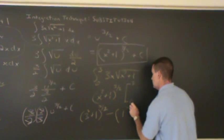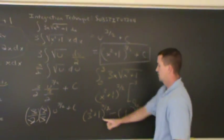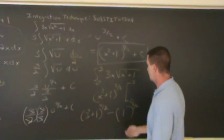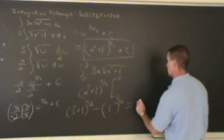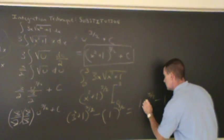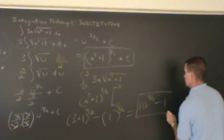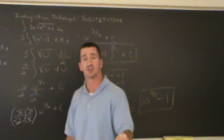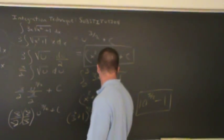That's just 1. 3 squared plus 1 is 10, so we get 10 to the 3 halves minus 1. And that's just 10 to the 3 halves. That's the square root of 10 cubed, which is also 10 times the square root of 10.